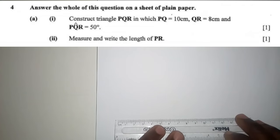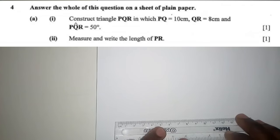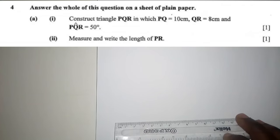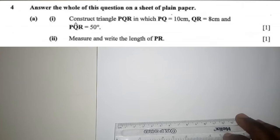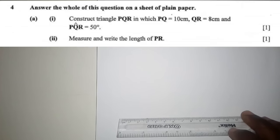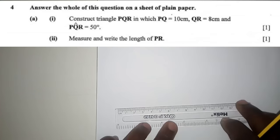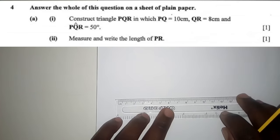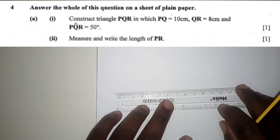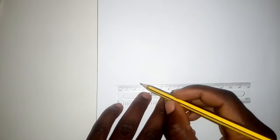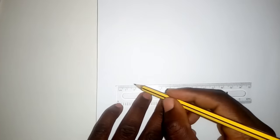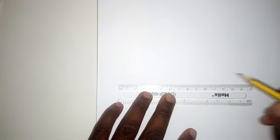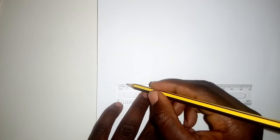In triangle PQR, PQ is 10 centimeters, QR is 8 centimeters, and angle PQR is 50 degrees. So let's start by constructing PQ.